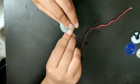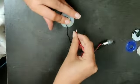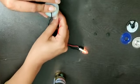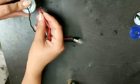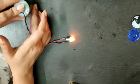Now, if the connections are loose, the bulb will not glow. But if the connections are proper, the bulb will glow. You can see here, children, the bulb is glowing because the circuit is complete.